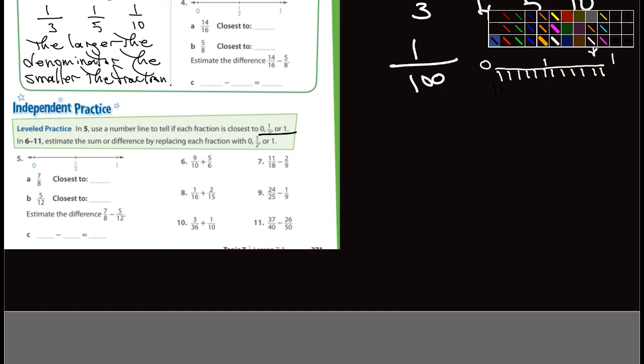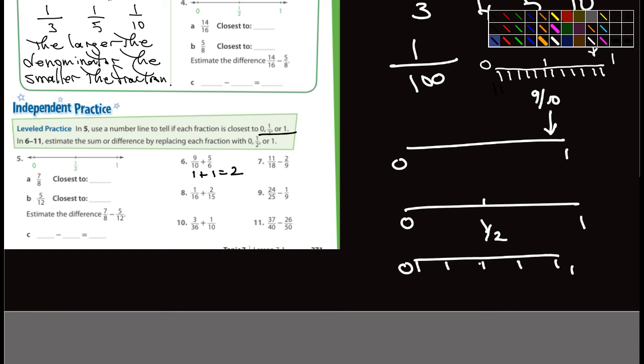So number six, for example, nine-tenths. Okay, here's zero. Here's one. Nine-tenths. That's nine of ten. That's going to be really close to one. Nine-tenths would be right about there. So you could look at it as nine-tenths is one plus five-sixths. So here's another line. Here's zero. Here's one. And so here's a half. And five-sixths. So there's going to be five marks. One, two, three, four, five. Okay. And here's zero. Here's one. One, two, three, four. Five-sixths is really close to one. So that's essentially going to be one plus one. And so an estimate would be two. Okay.